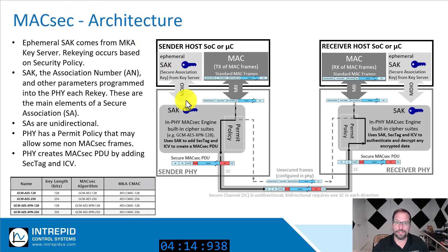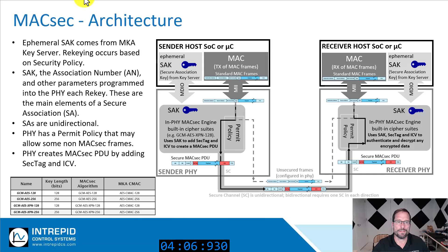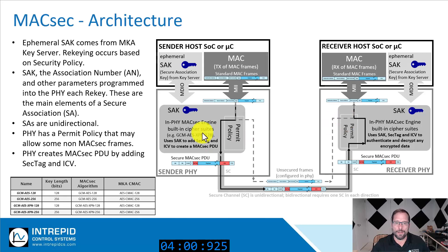Ephemeral keys are generally delivered through an MDIO hardware interface and standard MAC frames are delivered and received through a standard MII interface. A permit policy can be programmed into the PHY, allowing some frames to be transmitted unsecured while others are secured based on addresses, ether types, and other parameters.